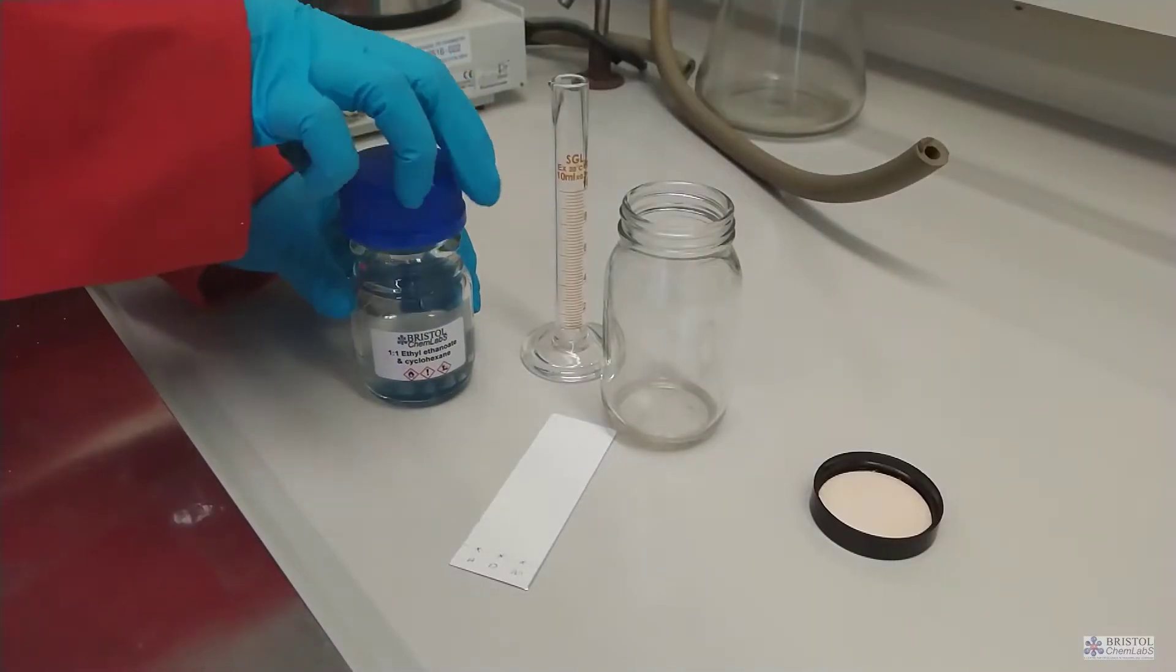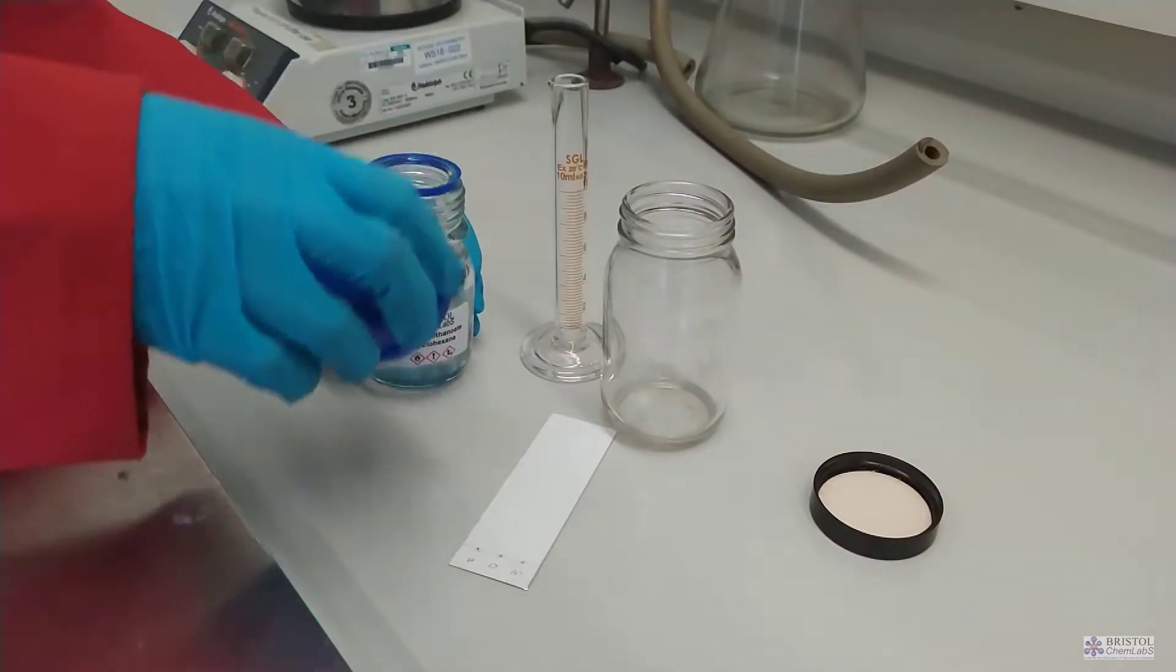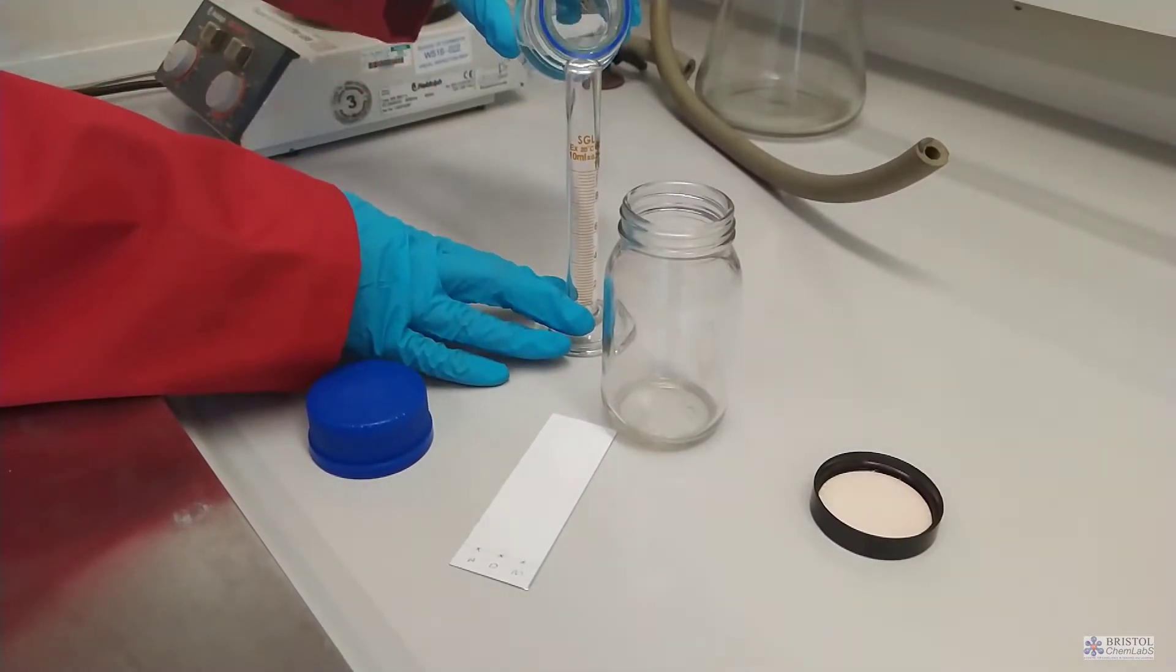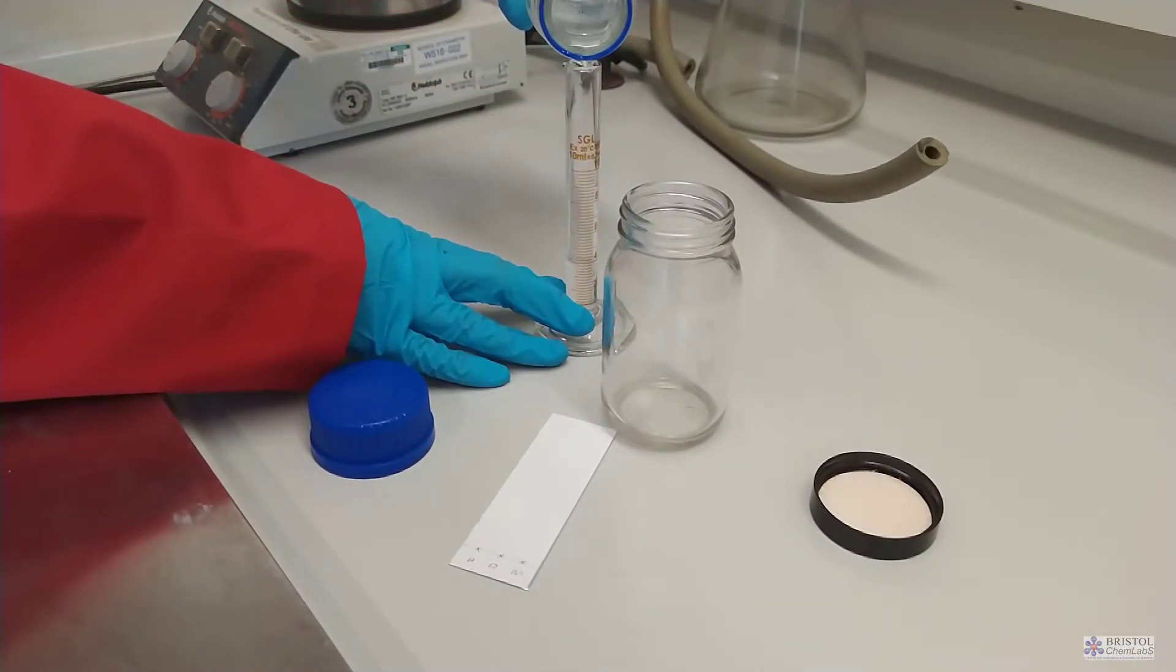The plate then needs to be put in a sealable jar with some appropriate solvent. The solvent mixture is ethyl ethanoate with cyclohexane in it. Ensure that the solvent level starts below the pencil line. Otherwise the mixture will simply dissolve into the solvent.